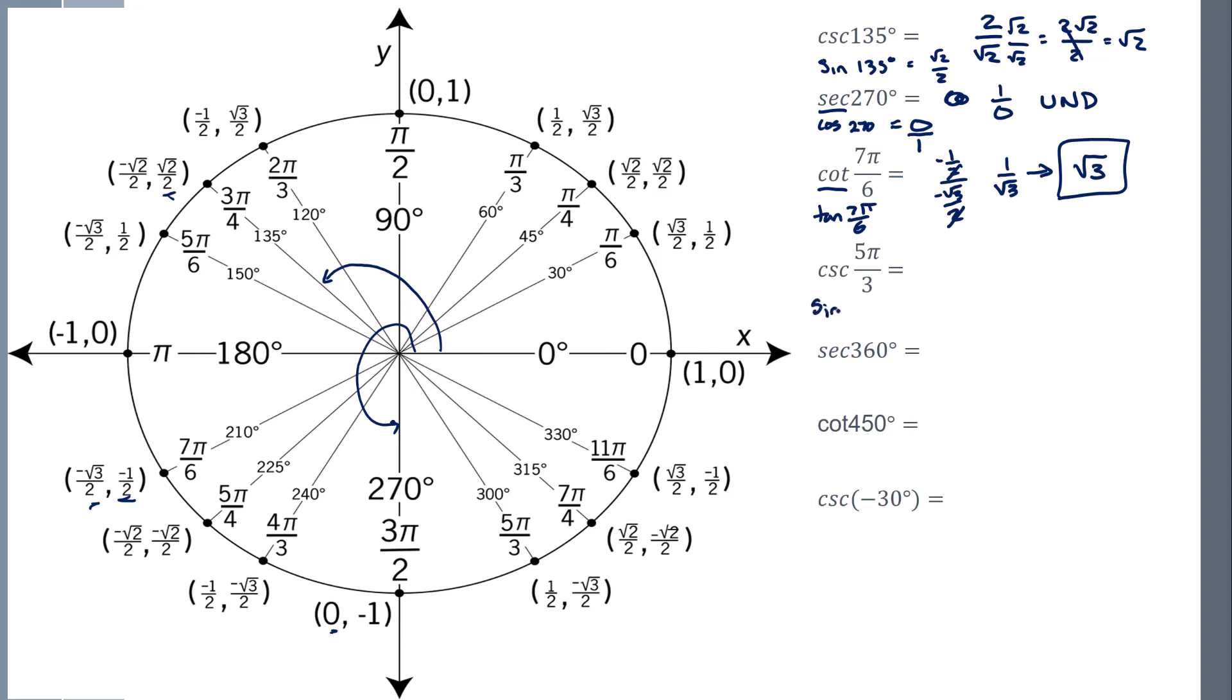Cosecant, that relates to sine. Okay, sine of 5 pi 3rds. So I'm going to go all the way to 5 pi 3rds. My sine value. Okay, so that's going to be negative root 3 over 2. Now I have to flip it. Because it's the reciprocal, now we can rationalize it. So you get 2 root 3 over 3.